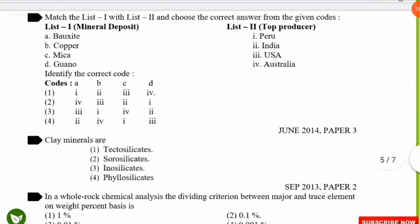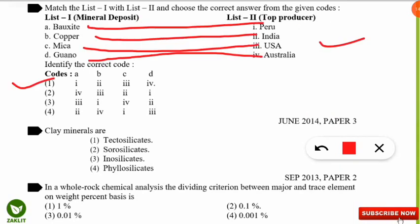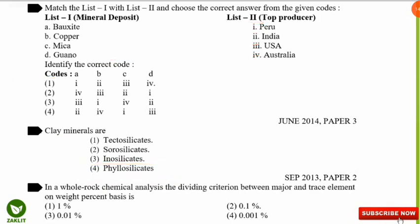There is another match-the-following on mineral deposits and top-producing countries (from 2014). The next question asks: clay minerals are what kind of silicates? The correct option is option 4 — clay minerals are phyllosilicates in nature.